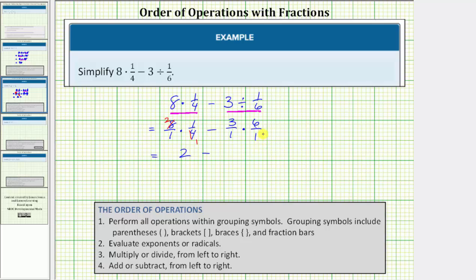Nothing simplifies so we multiply three times six is equal to eighteen so we have eighteen over one which is equal to eighteen.